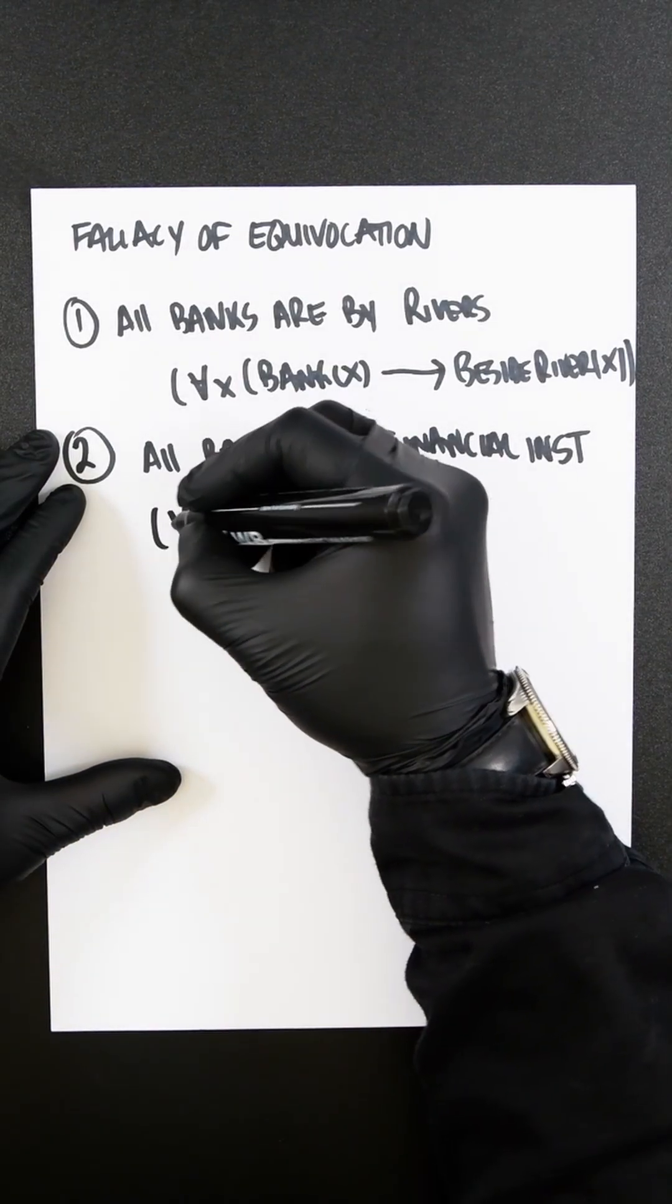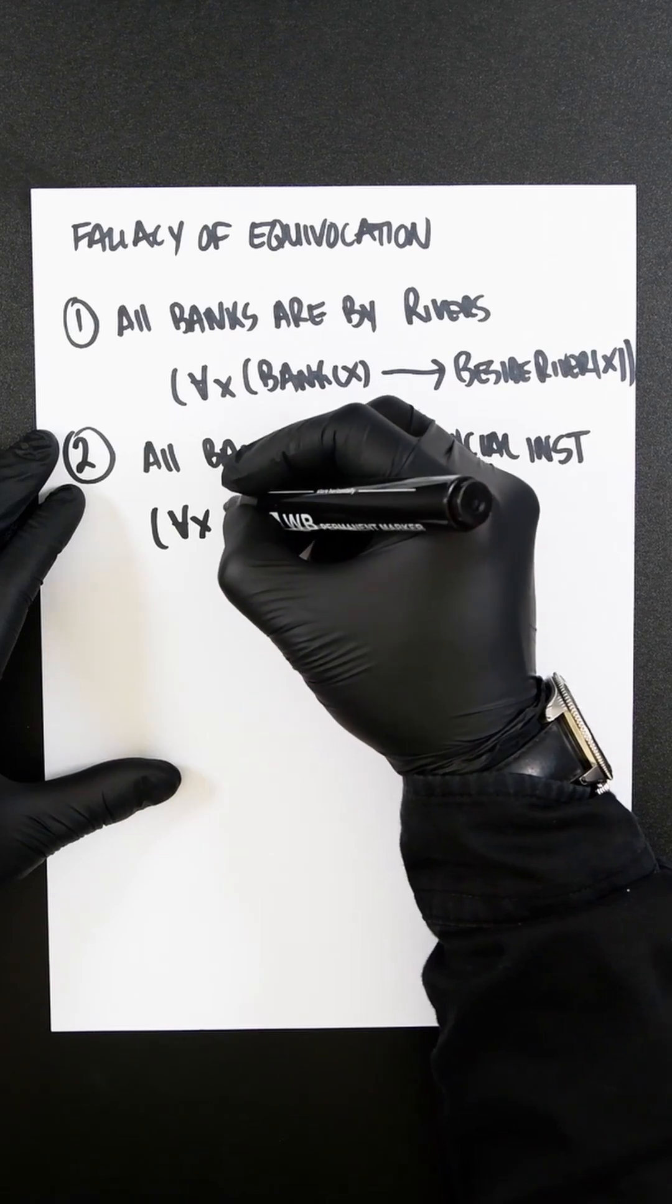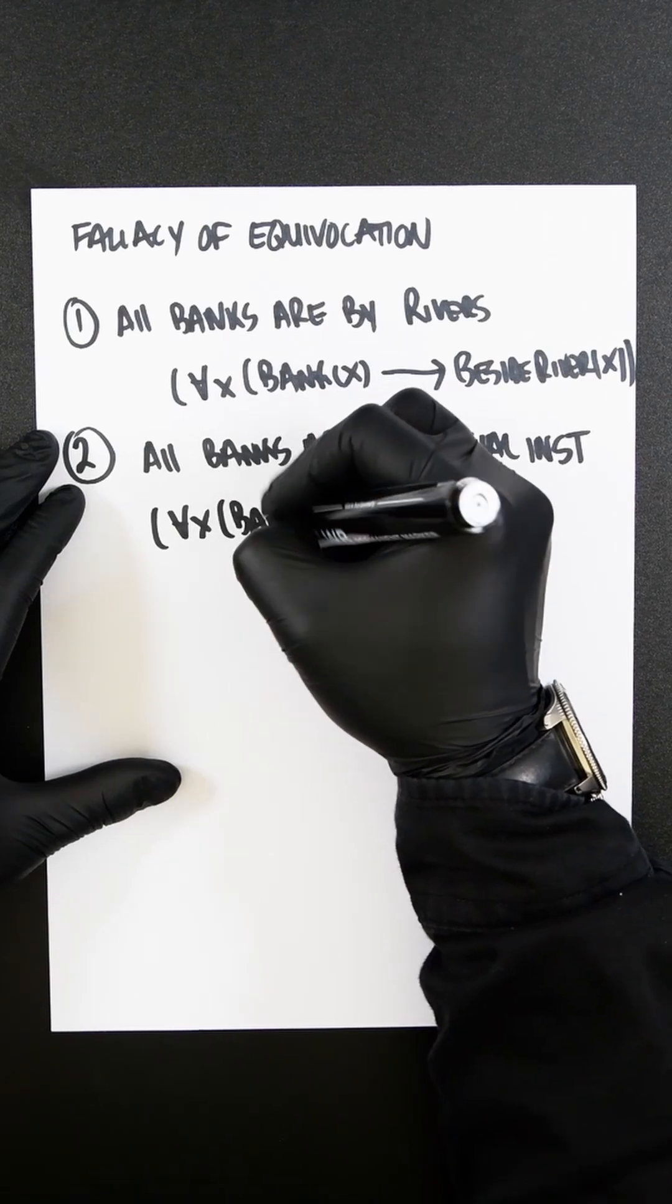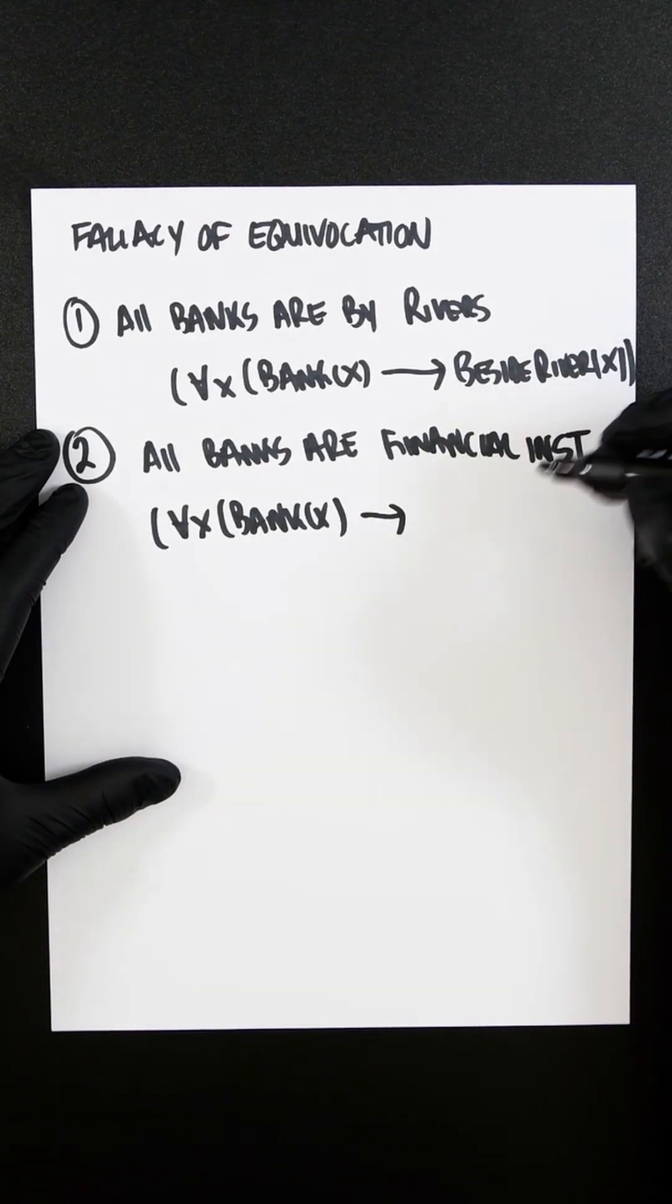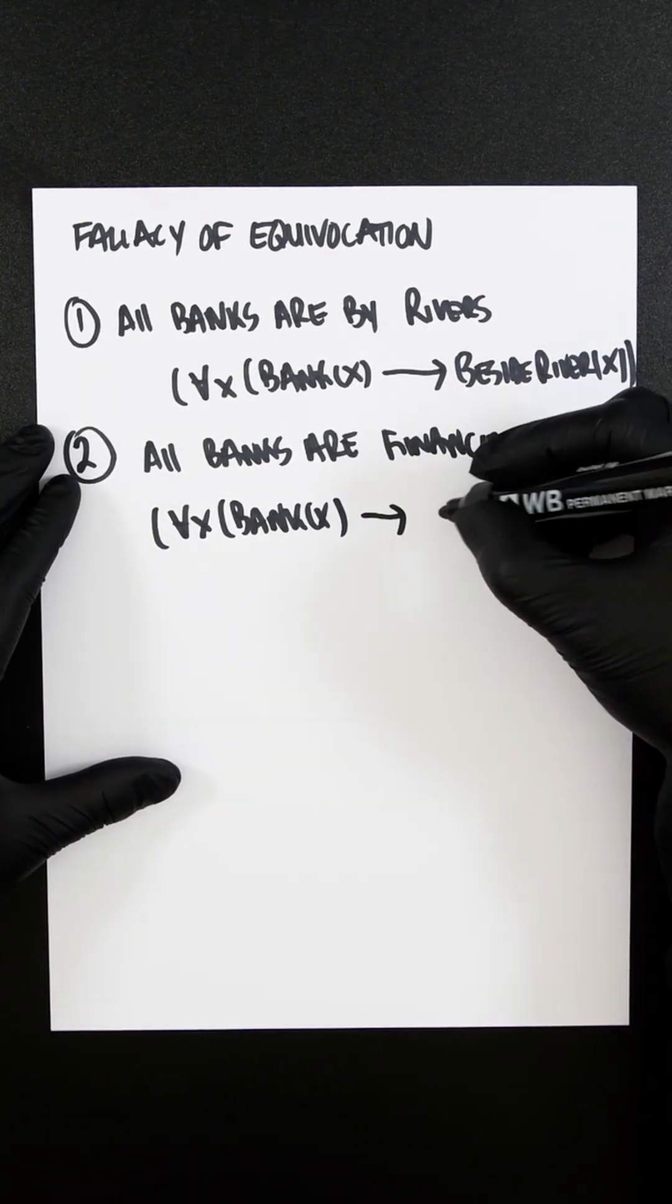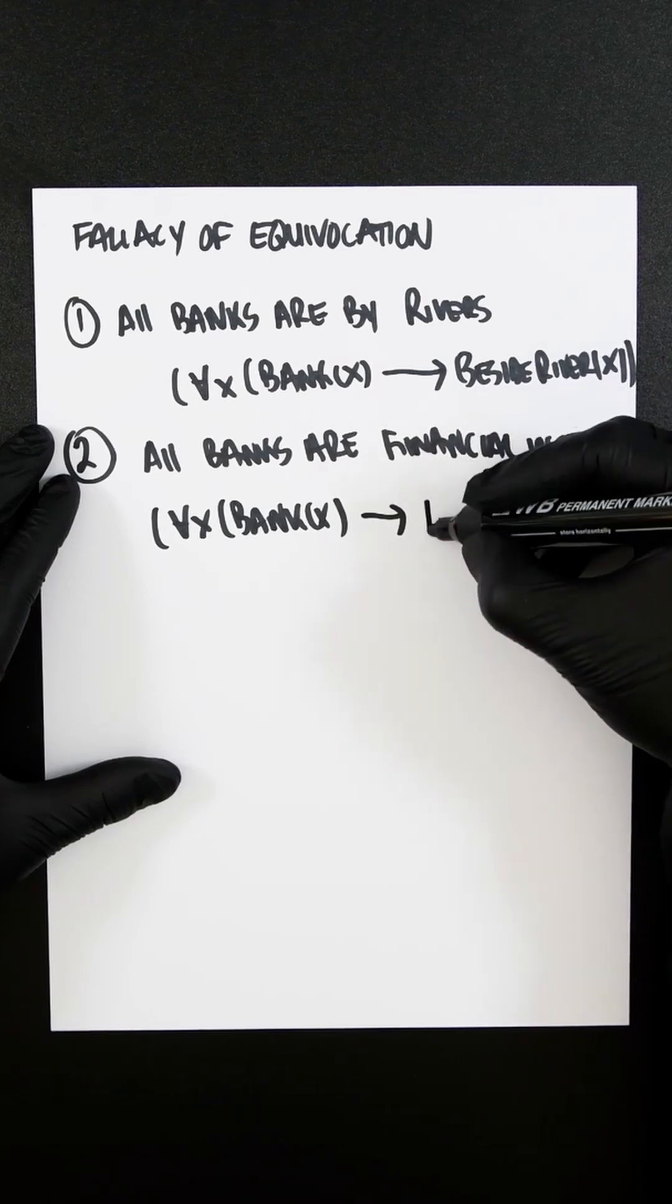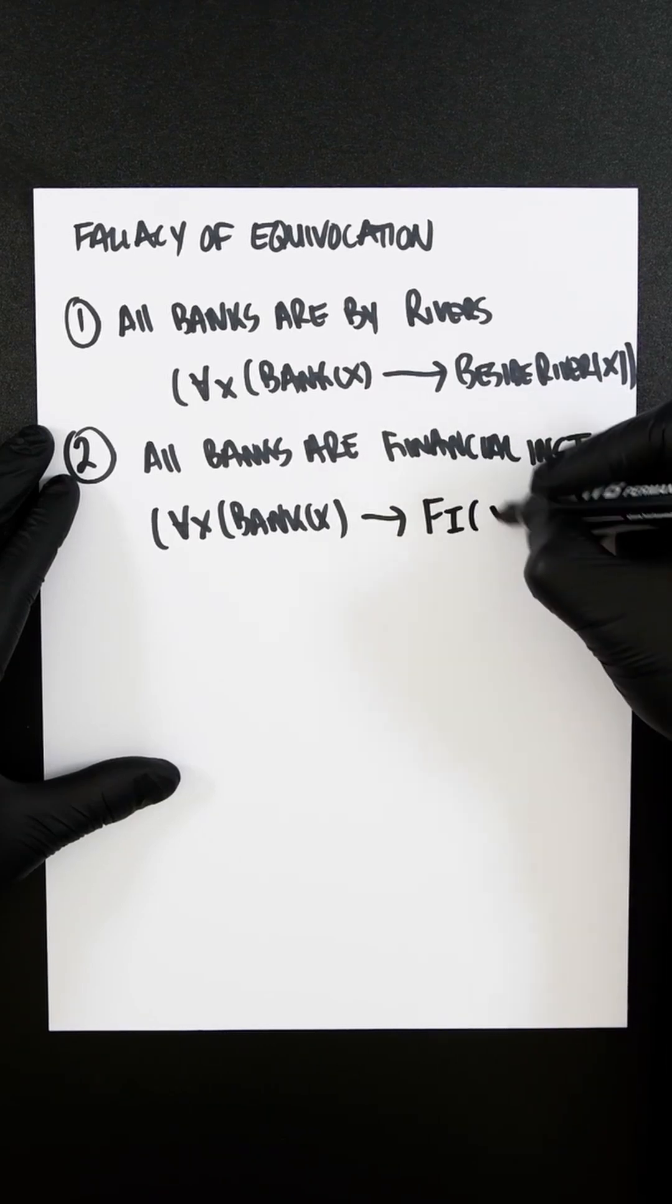So now we write that in predicate logic, which is going to be for all x, we're going to have bank x, if, and it's basically the exact same as the first premise. So instead of writing this all out, FI x.